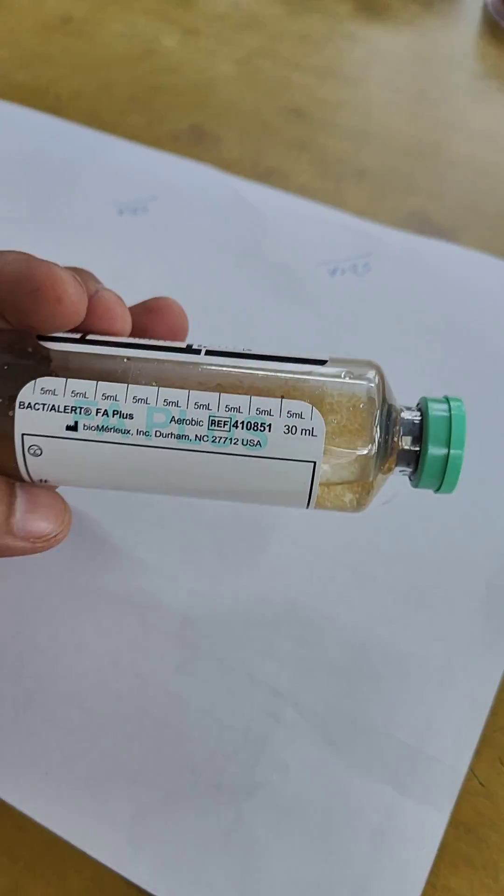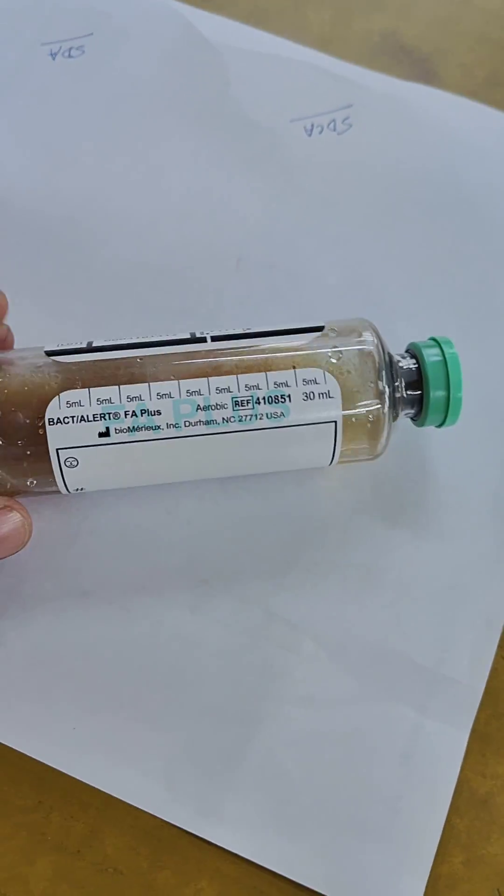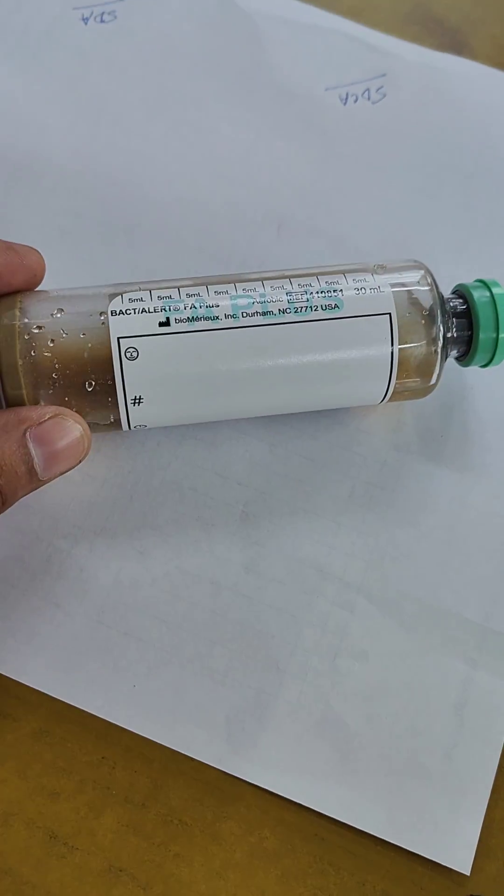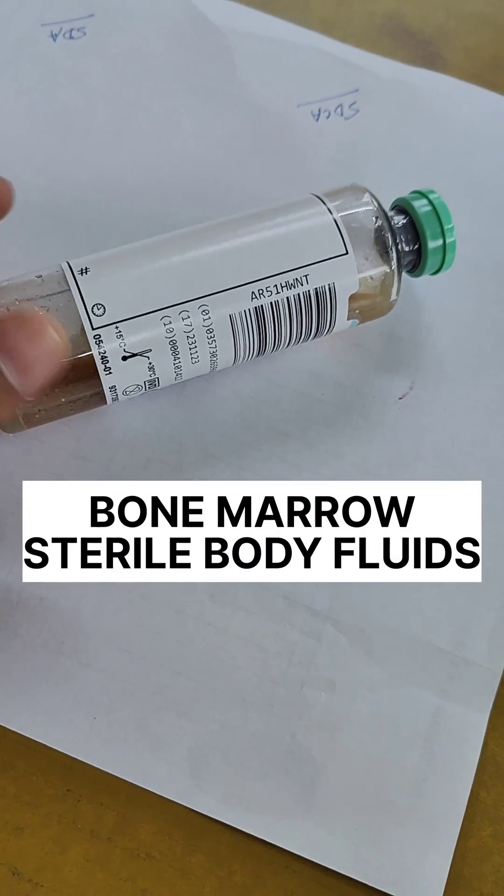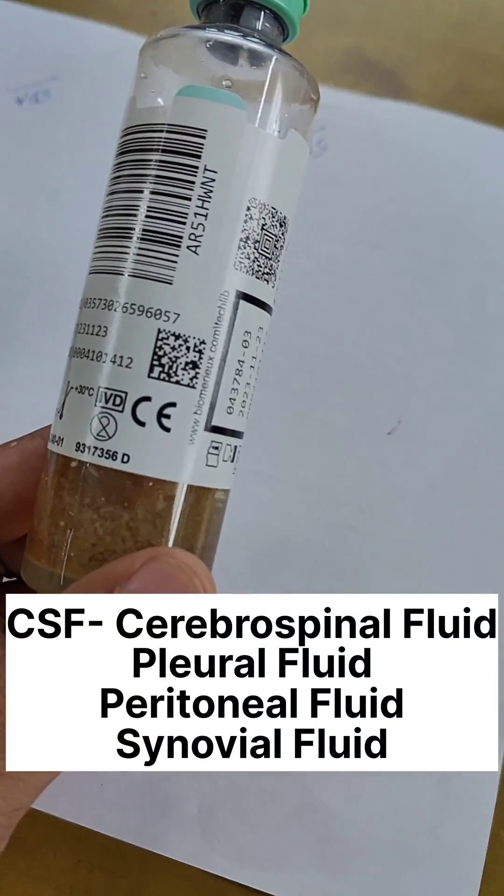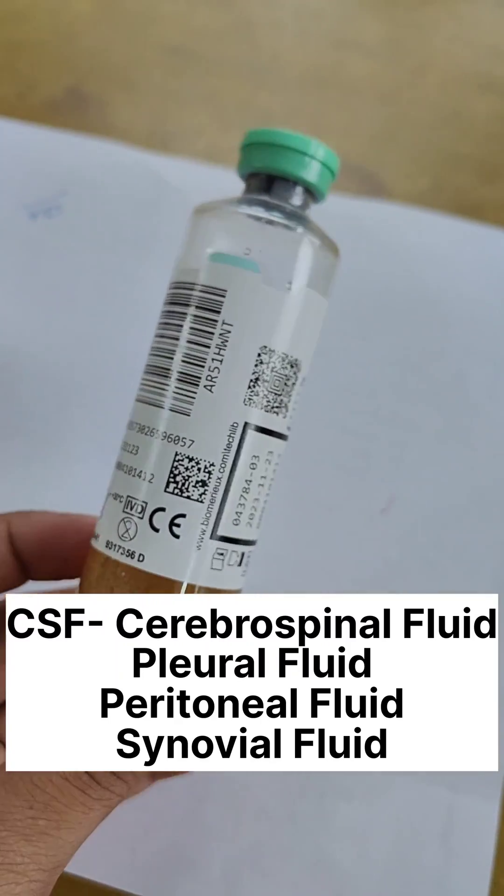Other than blood, this bottle can also be used for culture of bone marrow and sterile body fluids like CSF, pleural fluid, peritoneal fluid, synovial fluid, etc.